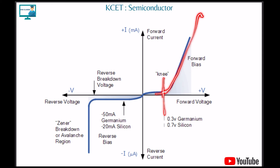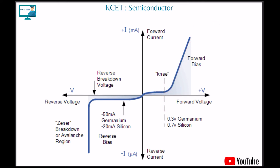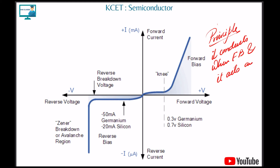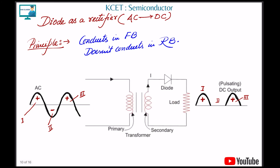The principle of a diode: it conducts when forward biased and acts as an insulator when reverse biased. In reverse bias it does conduct at very high voltages (around 70–80 volts), but we consider it non-conducting for practical purposes.